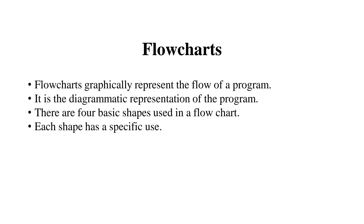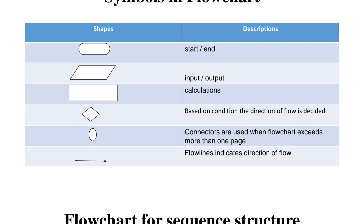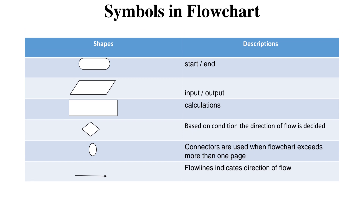The definition of a flowchart: it is a diagrammatic representation of the program. It involves various symbols and each symbol will have a specific usage. The four main symbols commonly used in flowcharts are: first, the start and terminator symbol. Each flowchart will have its starting symbol as 'start' as well as it will wind up with the terminator. Both start and terminator will have the same shape — that is, oval shape.